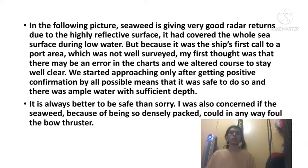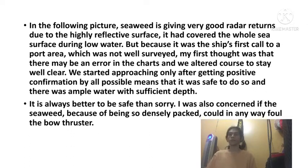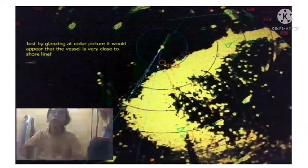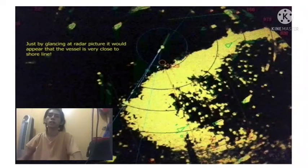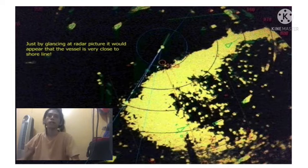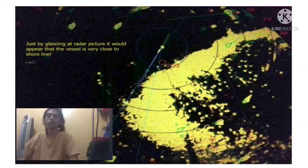It is always better to be safe than sorry. It was also considered whether the seaweed could in any way fall to the bow thruster. Another example shows the peak of the radar and your ship — just by glancing at the radar picture it would appear that the vessel is very close to the shoreline, meaning they are very close to the shoreline and have a target.